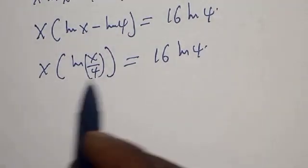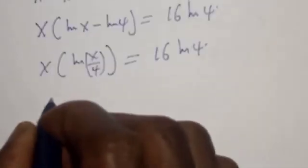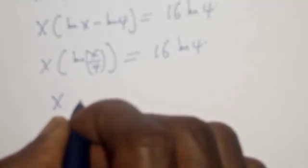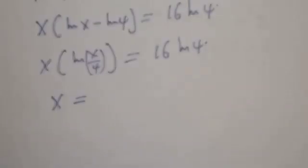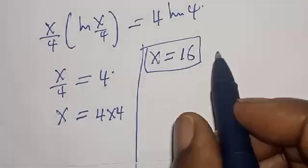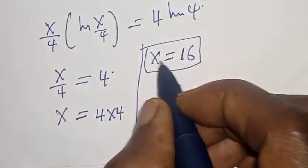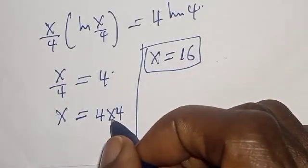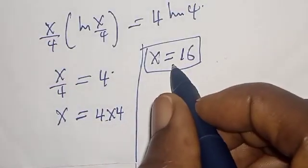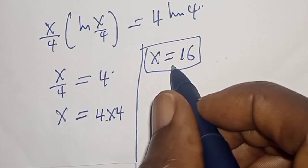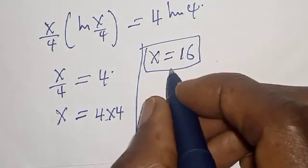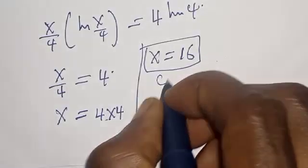Now checking this, we get x is equal to 16. That is the value of x — that is 4 times 4, which is 16.